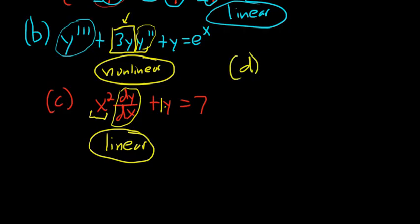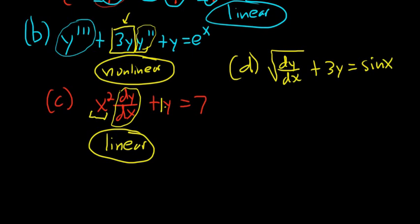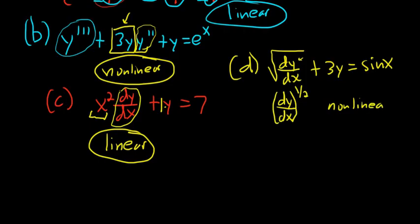Example D: √(dy/dx) + 3y = sin(x). The order is 1. This one is non-linear. You can think of the square root of dy/dx as (dy/dx) to the 1/2 power — because square root equals the 1/2 power — so that's not to the first power. Y and all its derivatives have to be to the first power, so this is non-linear.